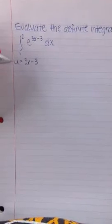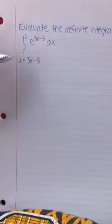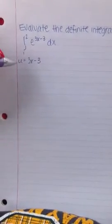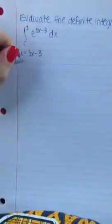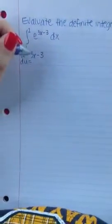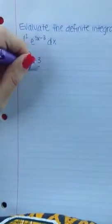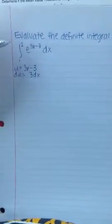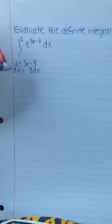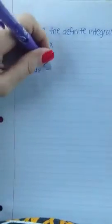From here we want to find the derivative of u. So du in this case is going to be 3 dx. Now in this equation we want to isolate dx, so dx equals 1 third du.